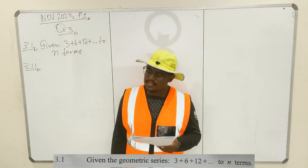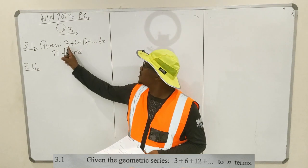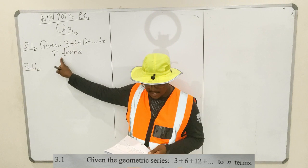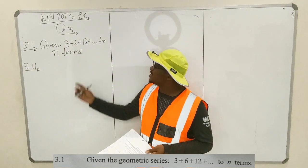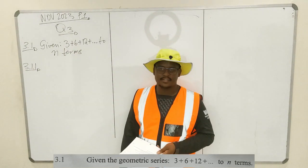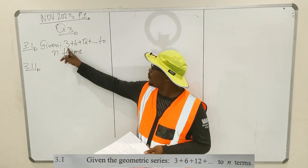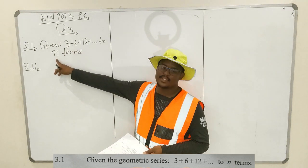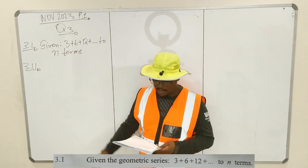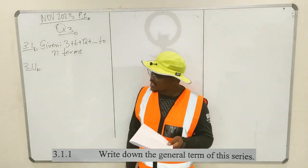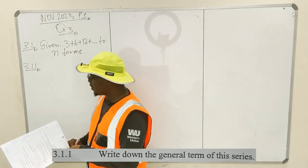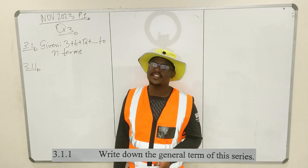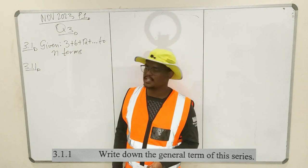Given the geometric series 3 plus 6 plus 12 to n terms. We're given this geometric series. It starts from term number 1, which is 3, up to n terms. That's 3.1.1: write down the general term of this series.